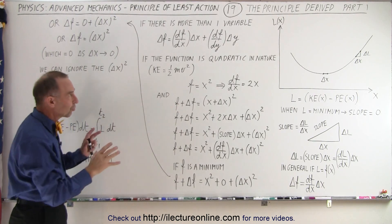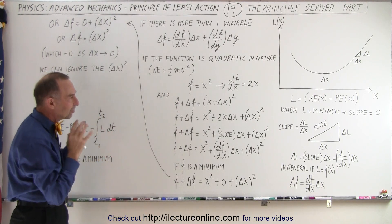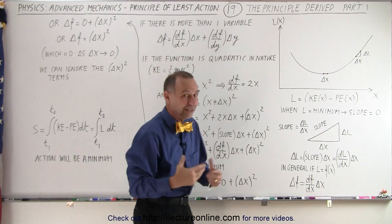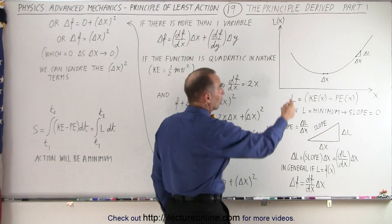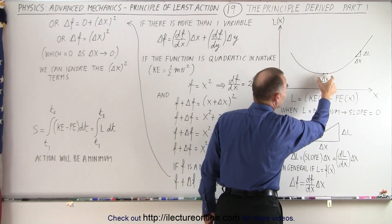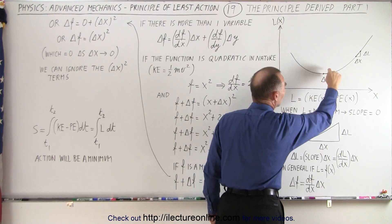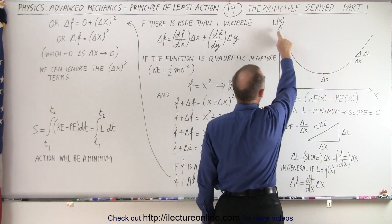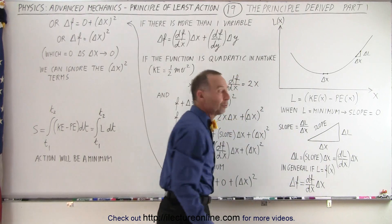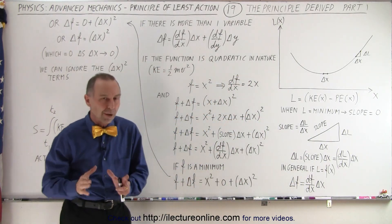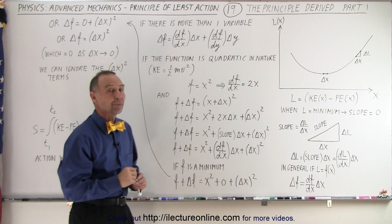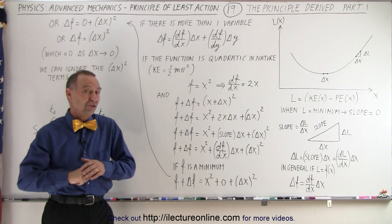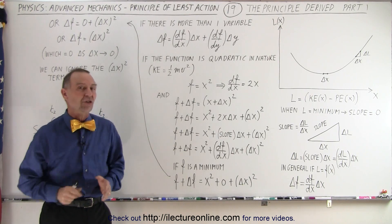That's the whole concept. We're trying to find the principle of least action by realizing that the integrand represented by L — or in general, by any general function — when the function reaches the minimum, if we make any small change in x, it will cause no change in y. In this case, any small change in x causes no change in the Lagrangian, and that's how we know we're at the minimum of the Lagrangian. That's the approach we're going to take to find the principle of least action by finding where the function doesn't change when we make a small change in x.